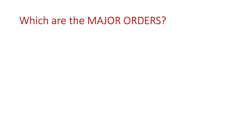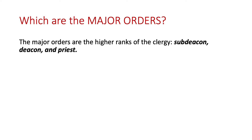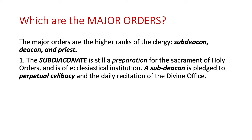Which are the major orders? The major orders are the higher ranks of the clergy: subdeacon, deacon, and priest. The subdiaconate is still a preparation for the sacrament of holy orders and is of ecclesiastical institution. A subdeacon is pledged to perpetual celibacy and the daily recitation of the Divine Office.